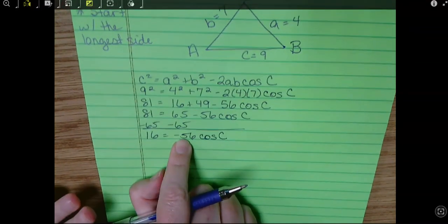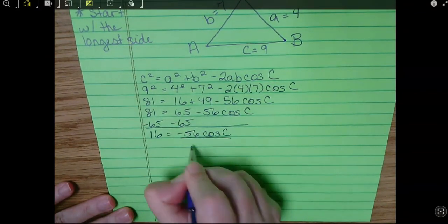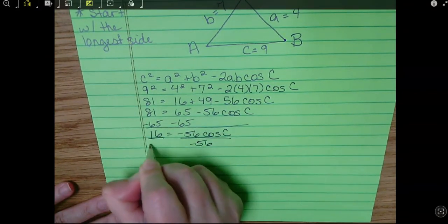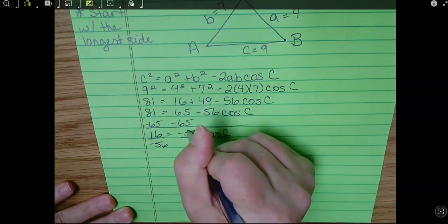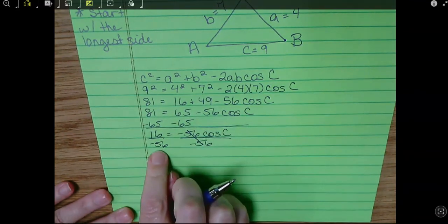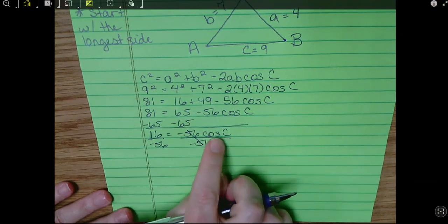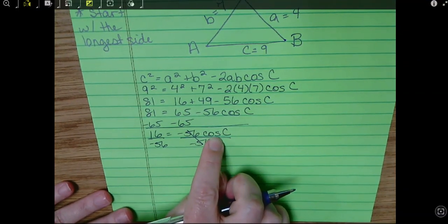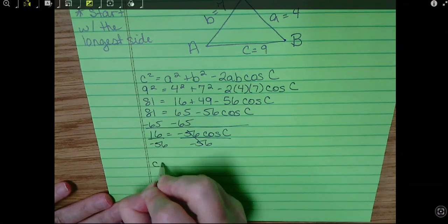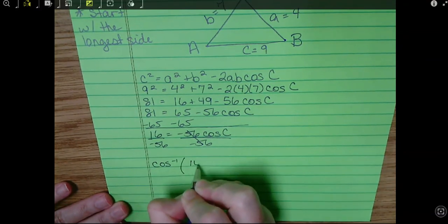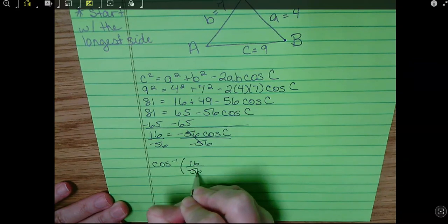Now we're going to divide negative 56 over. Okay, we're still not touching my calculator. No, no, no. How do you separate an angle from cosine? Good job. Yes, it's the inverse of 16 over negative 56.